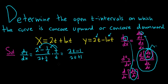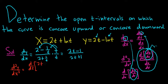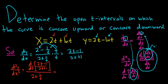Now we have to compute the second derivative. The second derivative of y with respect to x is d/dt of (2t minus 1) over (2t plus 1), all over dx/dt. We already computed dx/dt — it's 2 plus 1/t, the derivative of x with respect to t. In the numerator we have to use the quotient rule.